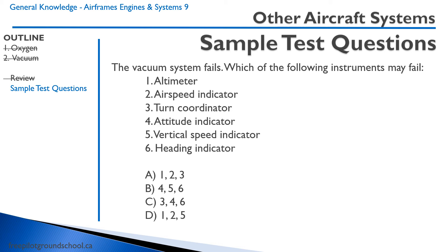Remember the gyro instruments — some may be electric, but we're assuming they're vacuum powered. The altimeter is connected to the static port, so nothing to do with the vacuum system. The airspeed indicator uses the pitot and static, so no. The turn coordinator is driven by the vacuum system — correct. The attitude indicator is correct. The vertical speed indicator is connected to the static port — no. The heading indicator is also vacuum powered. So the correct answers are three, four, and six. The correct answer is C.